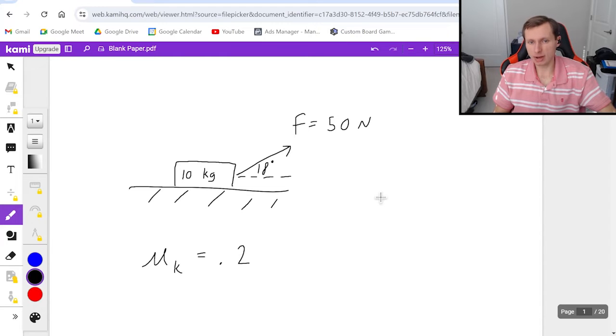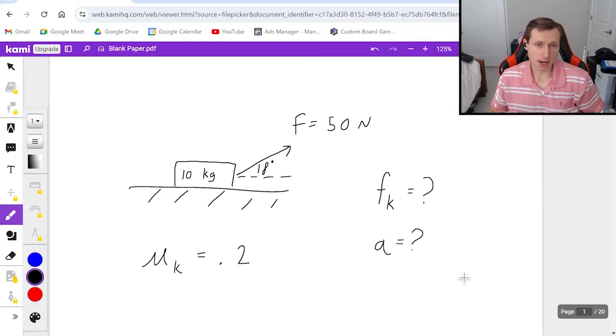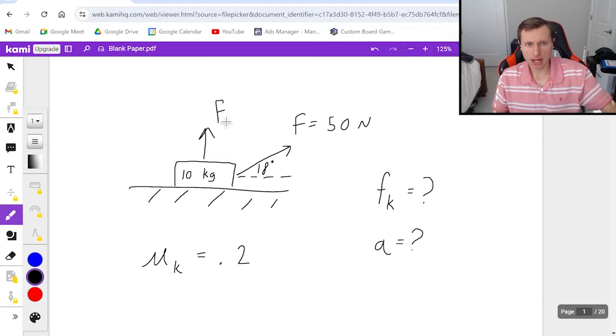So I'm going to ask you to solve for two things. Number one, I want you to find the value of the friction force f_k, and I want you to find the acceleration. And you can try this on your own. You can pause the video and give it a try. But if you're lost, here's how we do it. First, we need to draw our free body diagram. I already have one force on it, the 50 newton force. We also have normal force pointing up and gravity pointing down, mg.